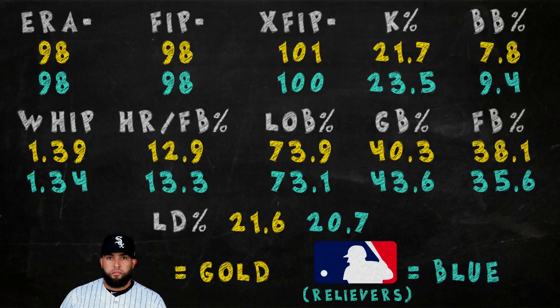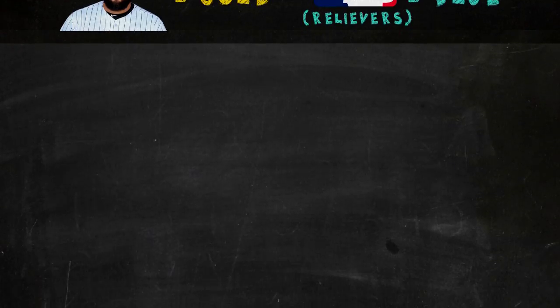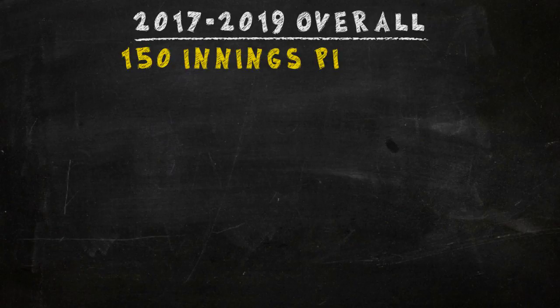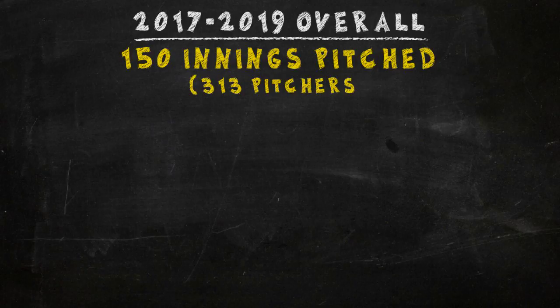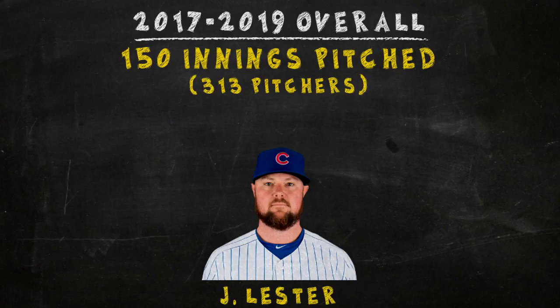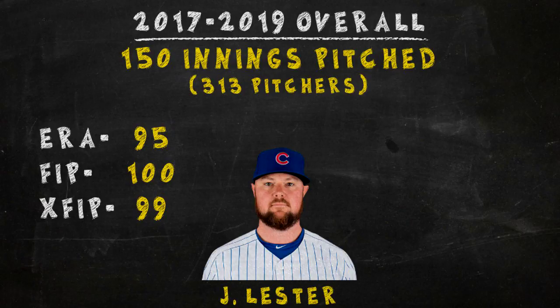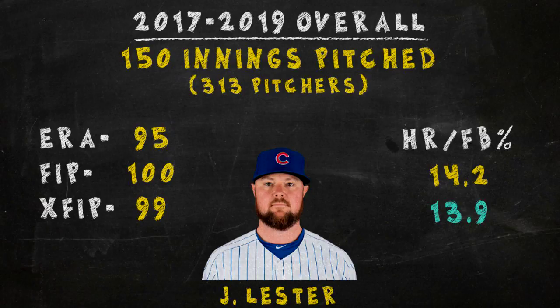Now we come to our final selection: the most average pitcher overall from 2017 to 2019. We had 313 pitchers with at least 150 innings pitched in that time frame, and the pick is John Lester. While he and Gausman were very close when looking at the average starter, the MLB averages for all pitchers tip the scales in Lester's favor. His run prevention metrics are all close to 100, and his home run per fly ball rate is now closer to average than Gausman's. So John Lester, I crown you the most average pitcher in baseball.